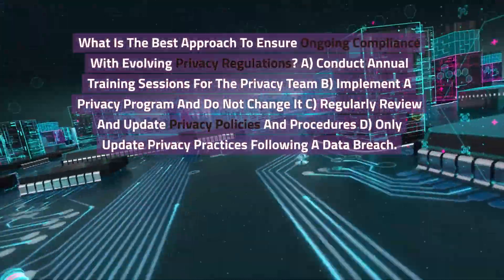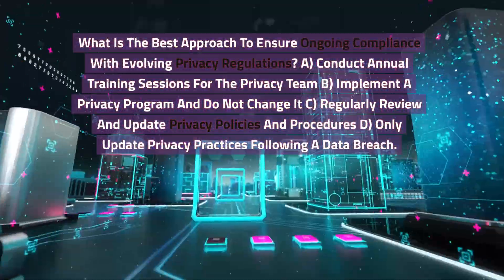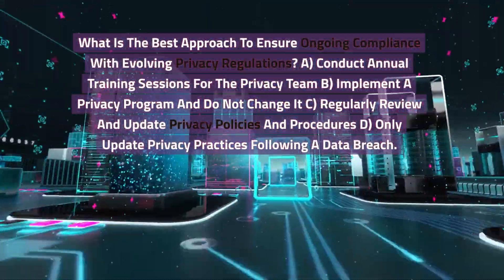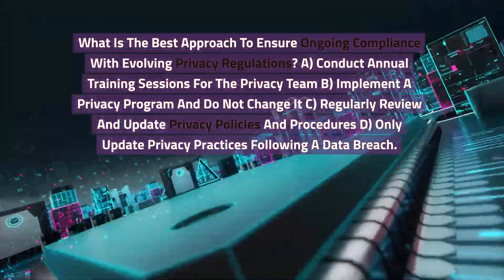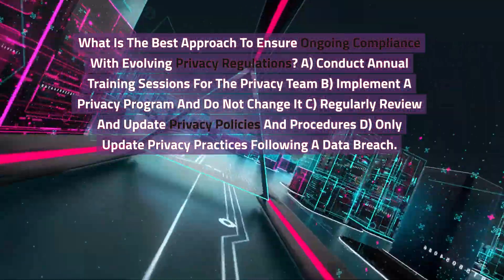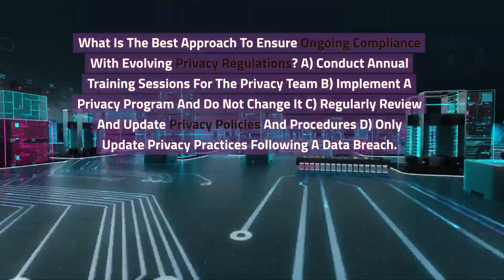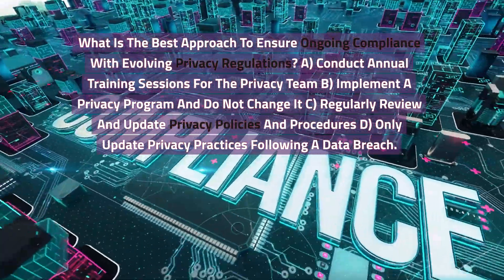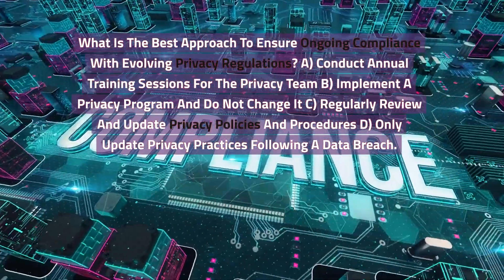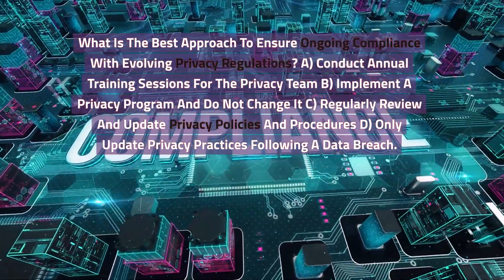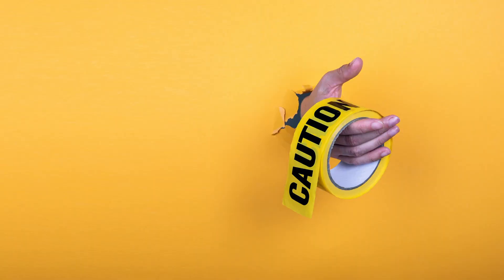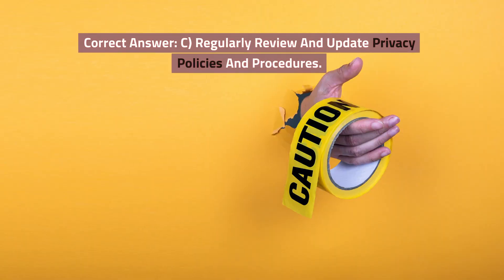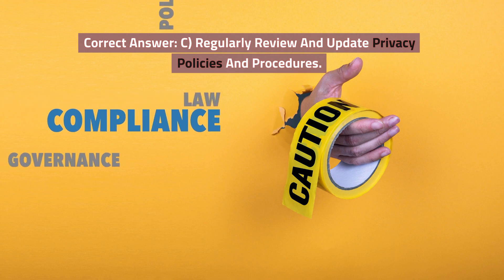What is the best approach to ensure ongoing compliance with evolving privacy regulations? A. Conduct annual training sessions for the privacy team. B. Implement a privacy program and do not change it. C. Regularly review and update privacy policies and procedures. D. Only update privacy practices following a data breach. Correct answer: C. Regularly review and update privacy policies and procedures.